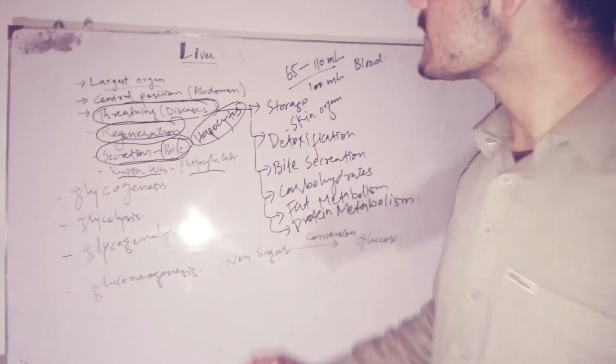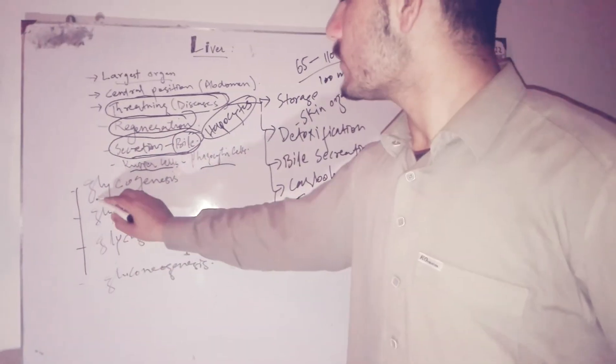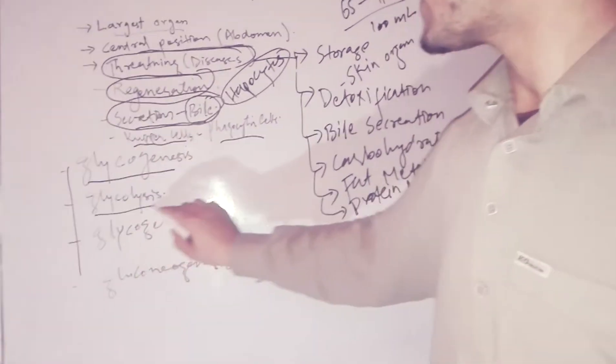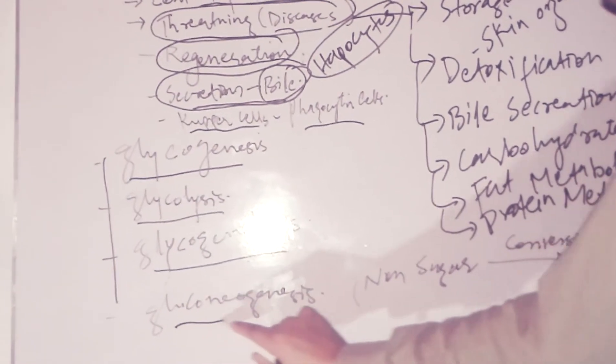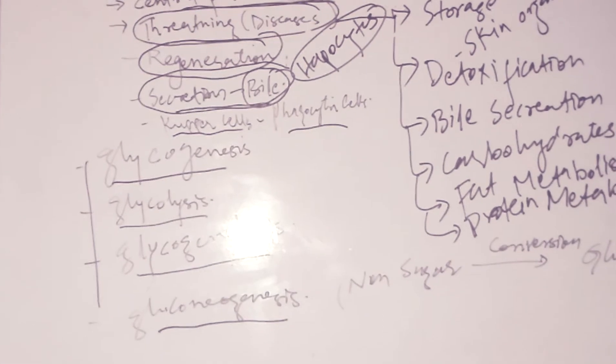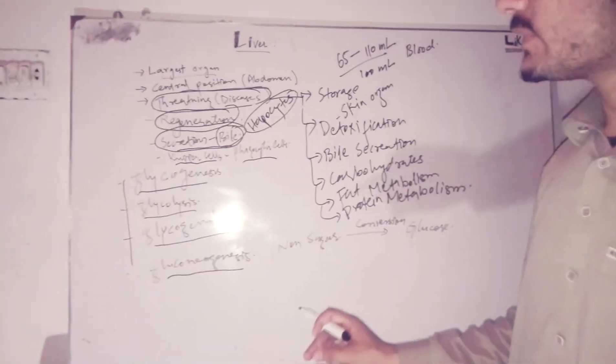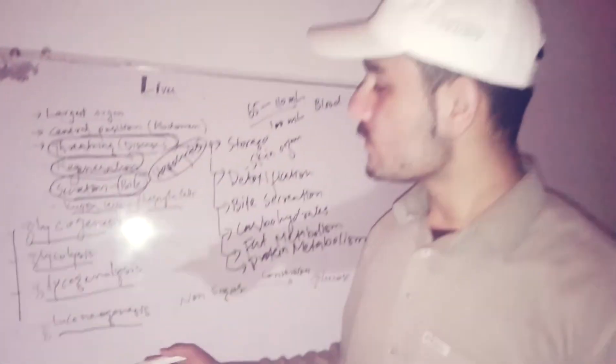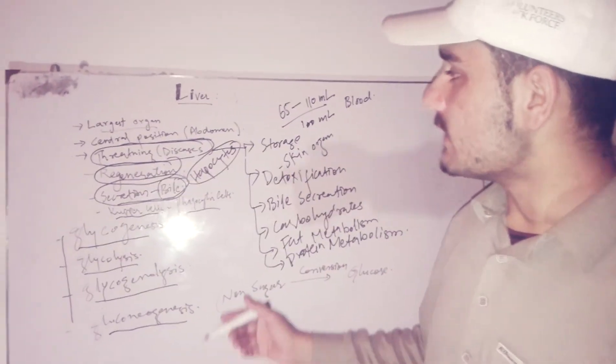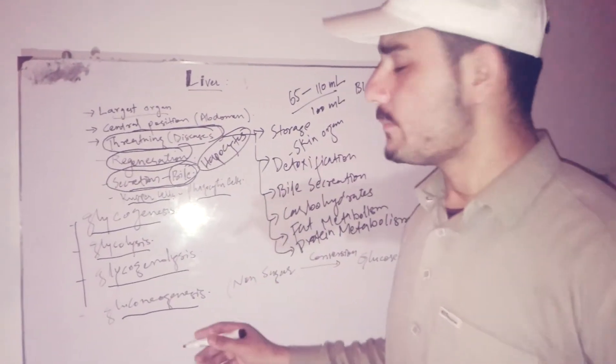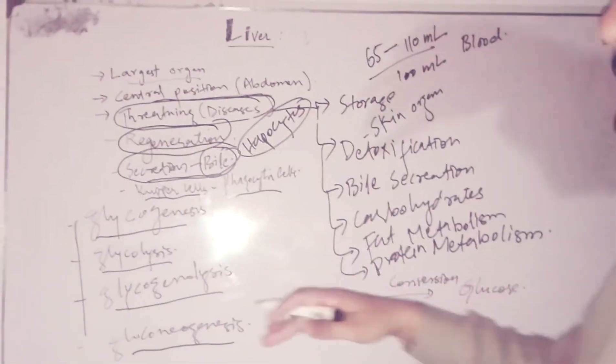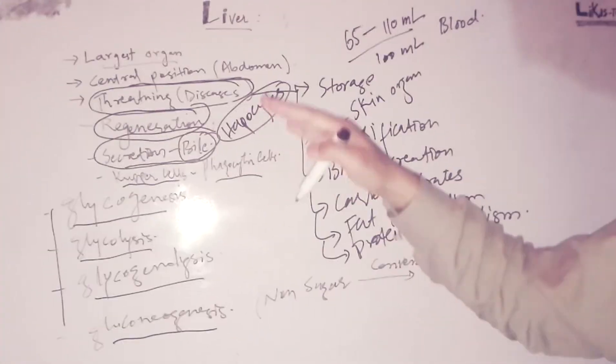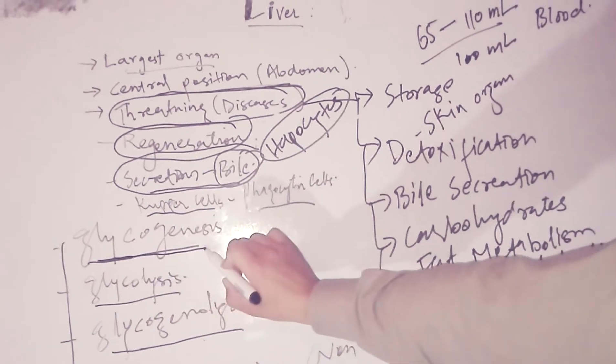Sometimes related to liver are glycogenesis, glycolysis, glycogenolysis, and gluconeogenesis. We know that liver maintains blood glucose level. When blood glucose level inside the body is high, the liver helps to maintain and make the glucose level constant.